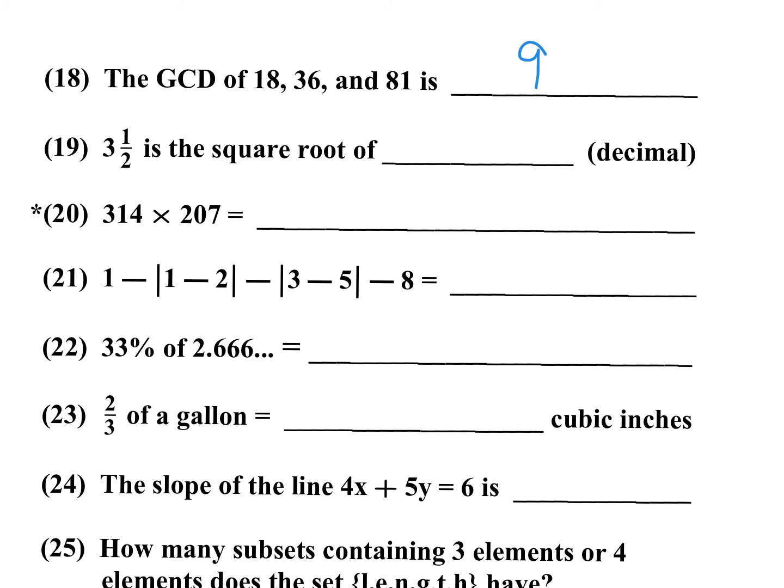3 1/2 is the square root of what? But you want the answer as a decimal. So 3 1/2 is 3.5. And that has to be squared. So 3.5 times 3.5. You're going to have 25. And then you're going to have 3 times 4. That would be 12. Looks like my marker is not working. So for number 19, the answer is 12.25. We need to take 3.5 times 3.5.